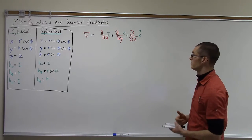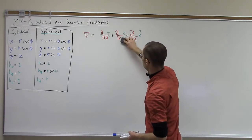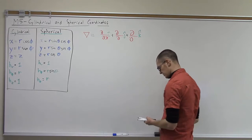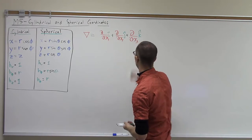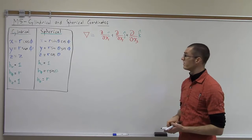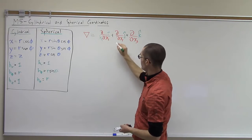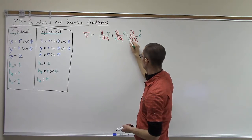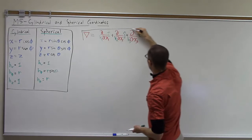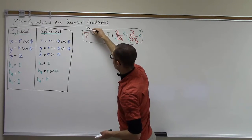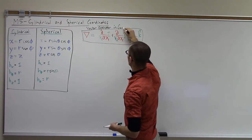The change we're going to make here, to generalize this to any curvilinear coordinate system, we're going to replace x, y, and z with x1, x2, x3, and then, taking into account the scale factors, wherever we see a dx1 we're going to have an h1, wherever we see a dx2 we're going to have an h2, and so on. This is how we define the vector operator in curvilinear coordinates.